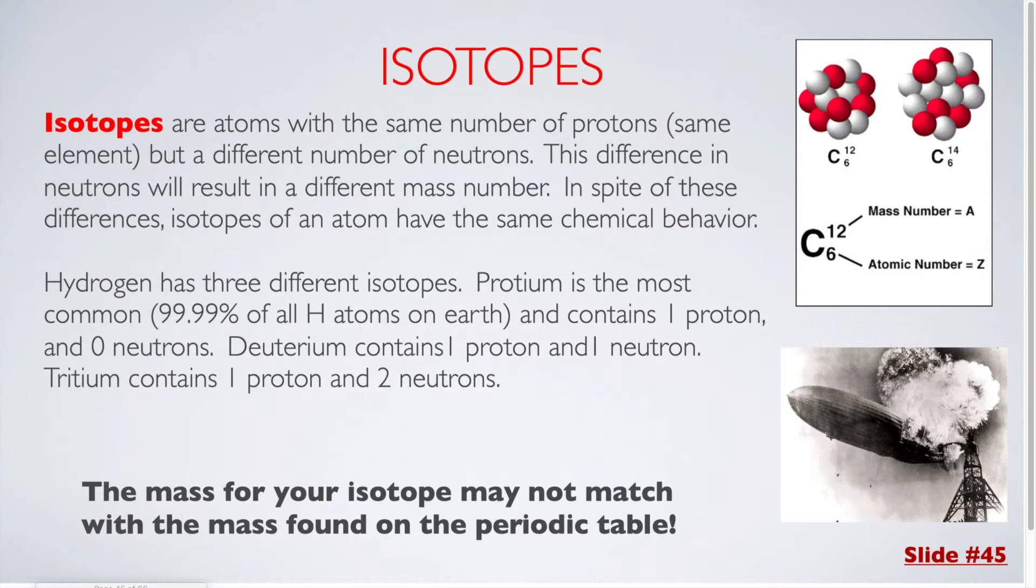The mass for your isotope may not match with the mass that is found on the periodic table, so it is important that if you are given a mass in a problem, that is the mass that you should be using. For example, the mass of carbon on the periodic table is 12.01, so if you round that, it would end up with 12, but there is a variation of carbon called carbon-14, which you can see up here. Carbon-14 has additional neutrons.